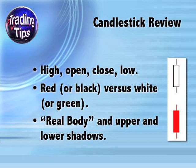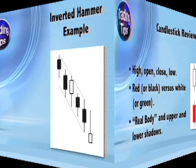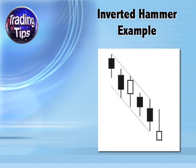Another note on terminology: the vertical lines extending from the real body, signifying the intraperiod highs and lows, are known as the candlestick's upper and lower shadows. Here's an example of an inverted hammer occurring at the bottom of a downtrend. What do you notice about the final candlestick on this chart? What's unique about it?